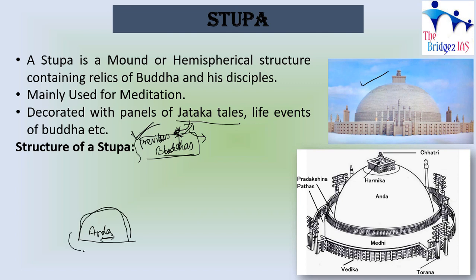Circumventing the Anda there will be a Vedika, which is also known as a railing. The space between the Anda and the Vedika is known as the Pradakshana path — that is the circumambulatory path through which pilgrims and monks can circumambulate the Anda.